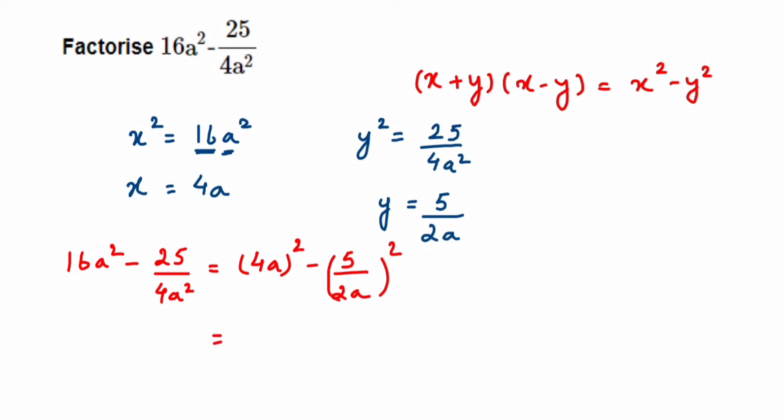Into (4a minus 5 upon 2a). This was a very simple problem. We just have to understand what is the x and y value and substitute in the identity.